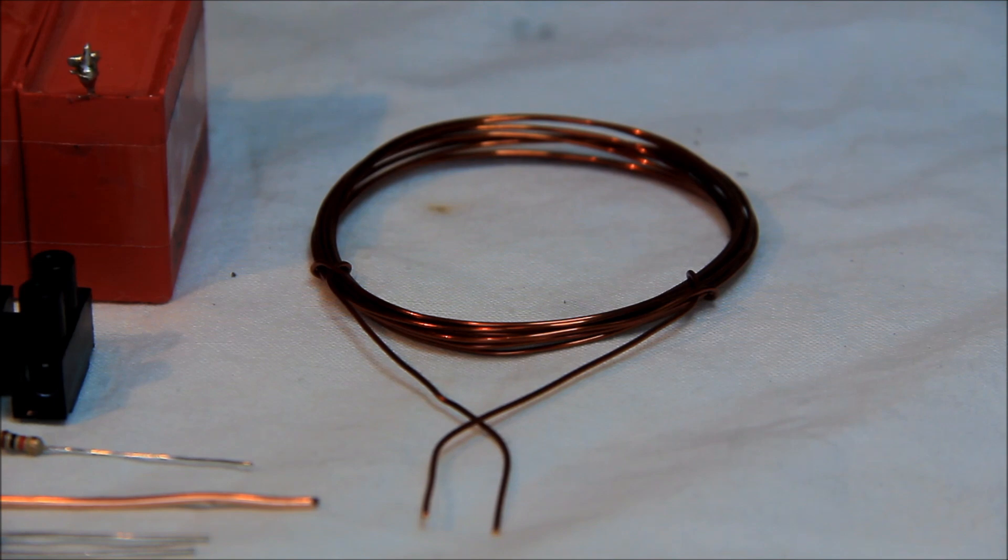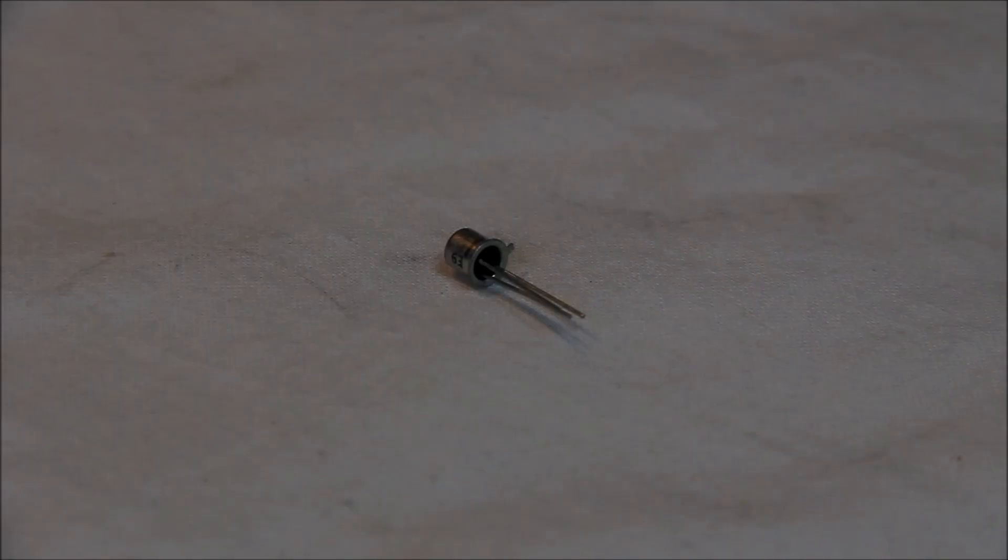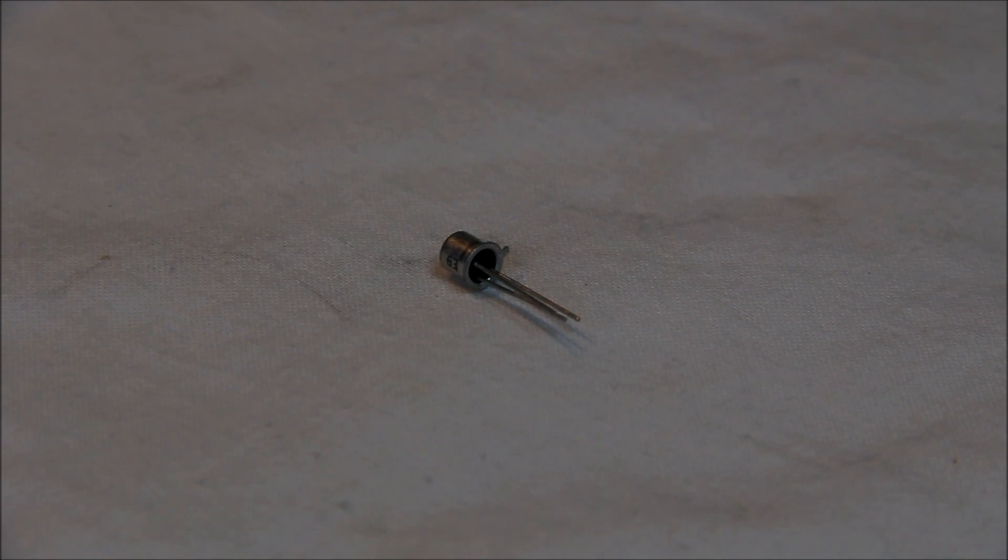Then you need a coil. This coil has 15 windings with, I think, a 0.7 millimeter wire. It doesn't matter which wire you use, but it must be copper wire, a little bit stronger. We also need a transistor. This is a 2N2222 transistor and now we start building our small high-voltage driver.